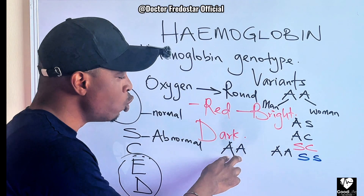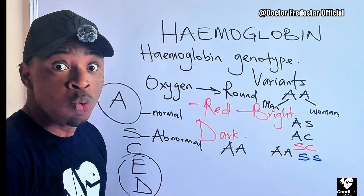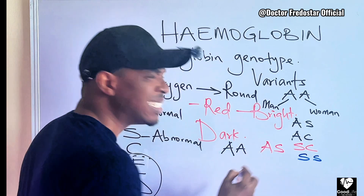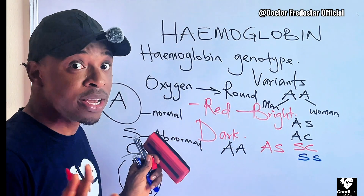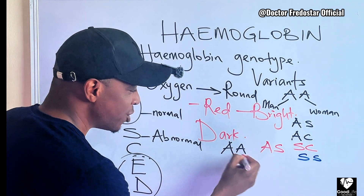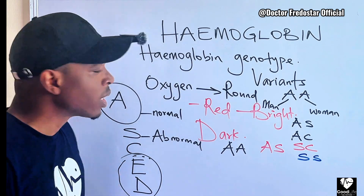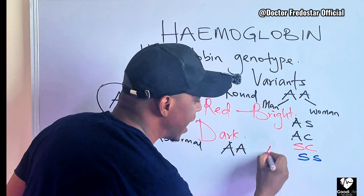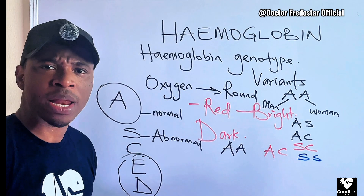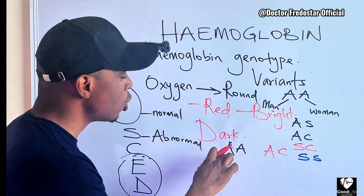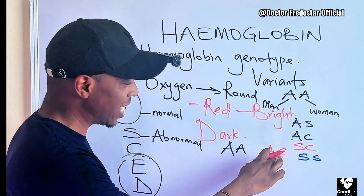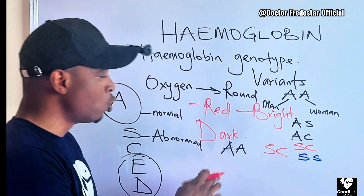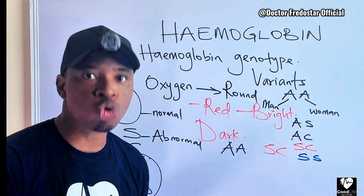But what if you are AA and the person you want to marry is AS? Is there any problem? There is no problem — you can marry, because the normal hemoglobin is dominant and you will have normal children. What if the person you want to marry is AC? There is still no problem. You can marry because your hemoglobin genotype is AA and theirs is AC — no problem, you can still marry.